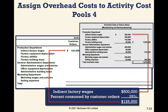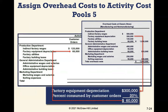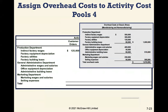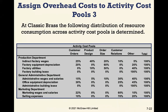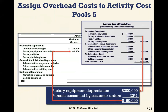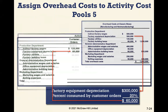To assign overhead costs to the activity cost pools: indirect factory wages are $500,000, and 25% consumed by customer orders means we allocate $125,000 to the customer orders activity pool. Similarly, factory equipment depreciation allocates 20% of its cost to customer orders. We use the determined percentages to allocate manufacturing and non-manufacturing costs that are not as easy to trace through other processes.